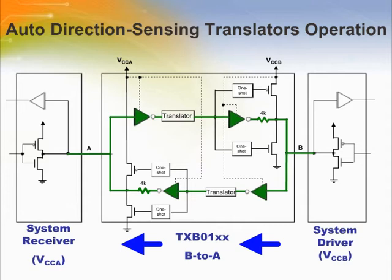Next, the same system is transmitting a low signal from B to A. First, the system driver on the B side has to overdrive the B output of the TXB01XX device, which is holding a weak high. This can be done as long as the system driver has a drive strength of at least 2 mA. Once the TXB01XX is overdriven, the low signal propagates from the B side to the A side. The one-shot speeds up the high-to-low transition on the A side and then switches off.